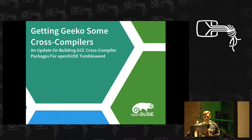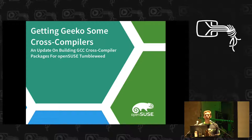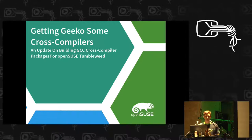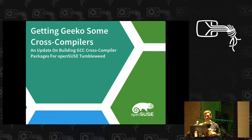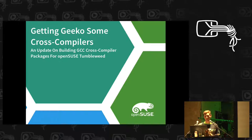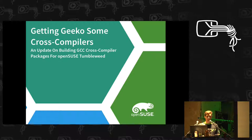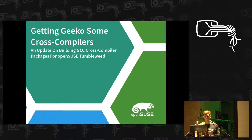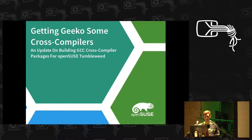At some point during Hack Week 10, a colleague of mine, Richard Biener, looked into building cross-compilers for the OpenSUSE distribution — not just available on it, but for the architectures that OpenSUSE uses: x86, PowerPC, ARM, and maybe S390.